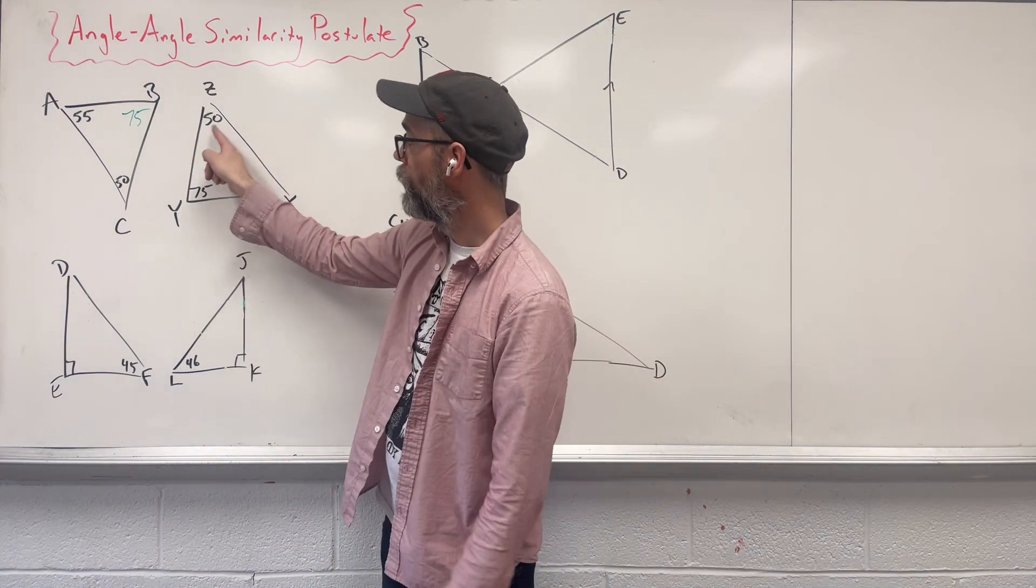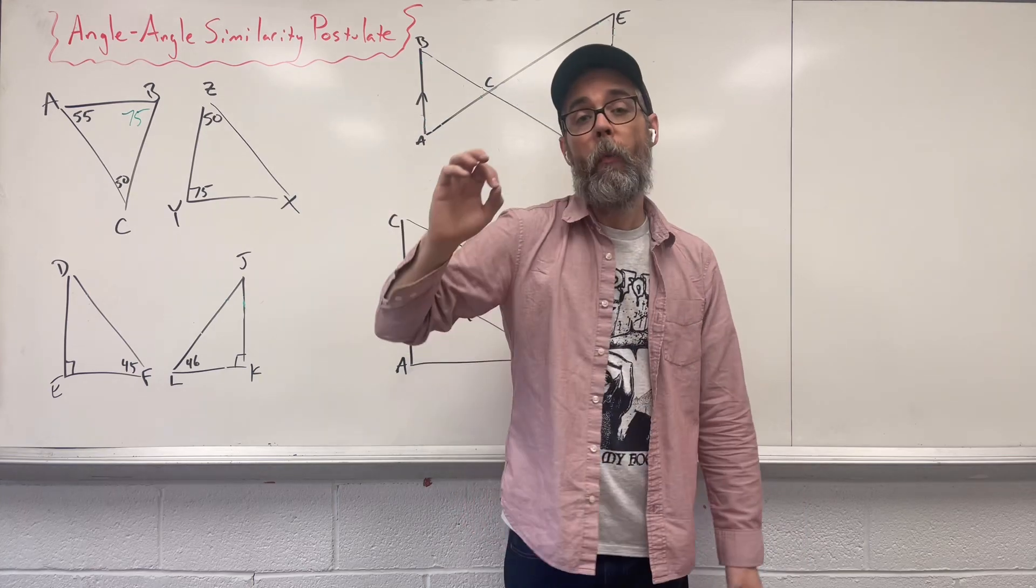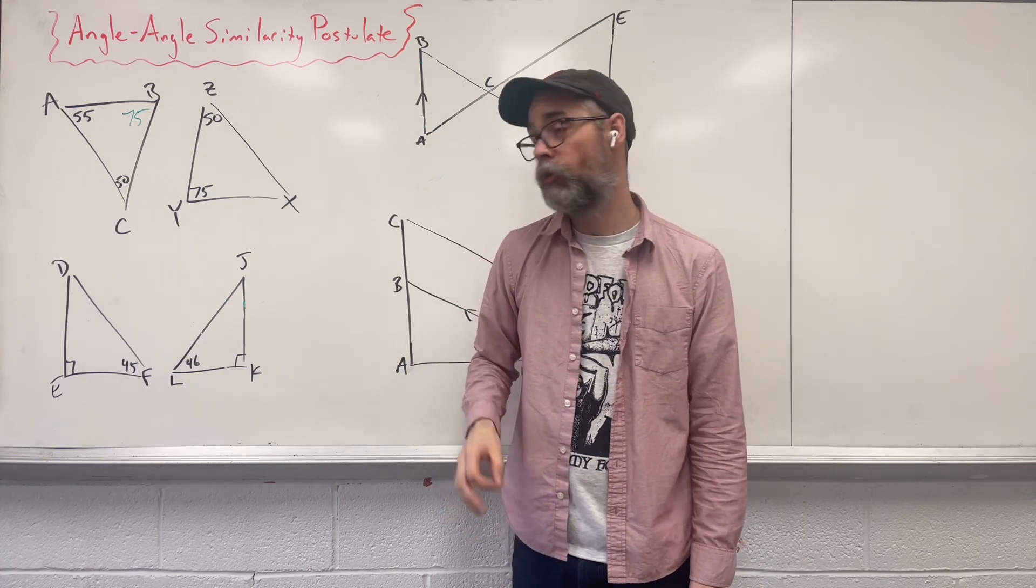So now that I share 50 and I share 75, by this rule, both of those triangles have to be similar to each other.